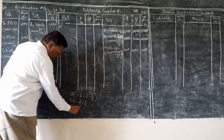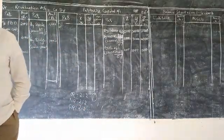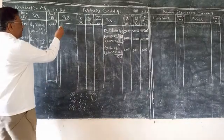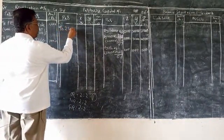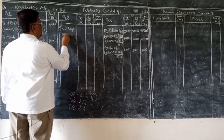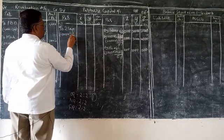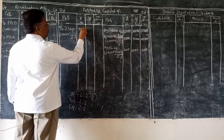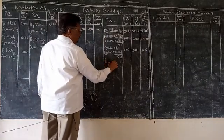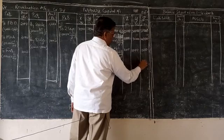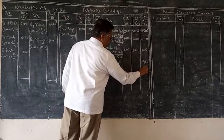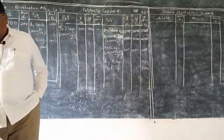Continuing partners capital account. X capital account debtor to Z capital account: 15,000 into 1 upon 2 equals 7,500. Z capital account credited by X capital account 7,500 and Y capital account 7,500.